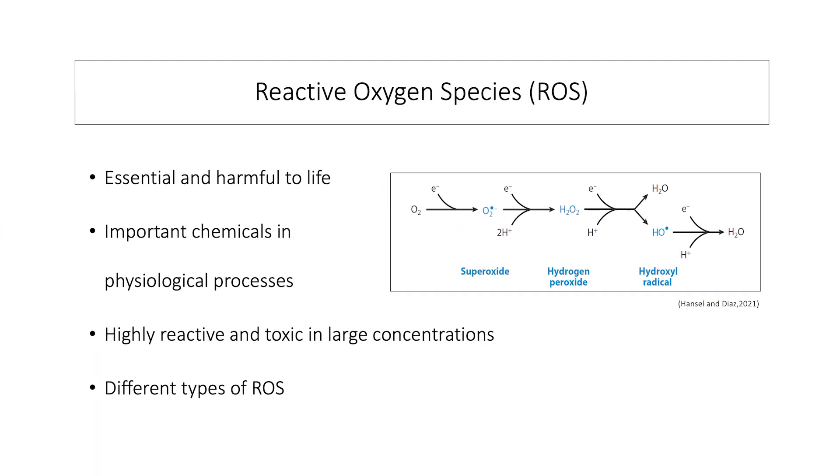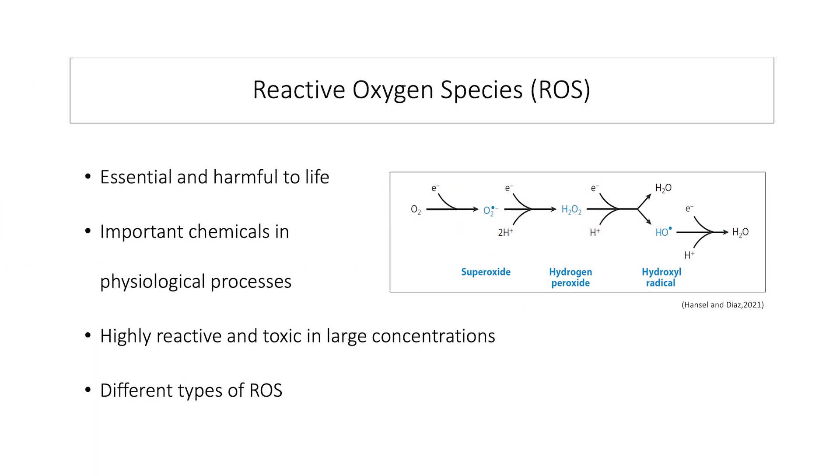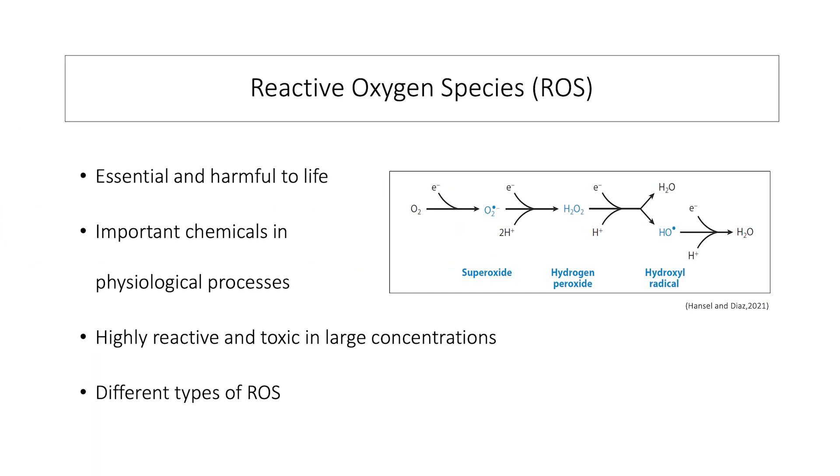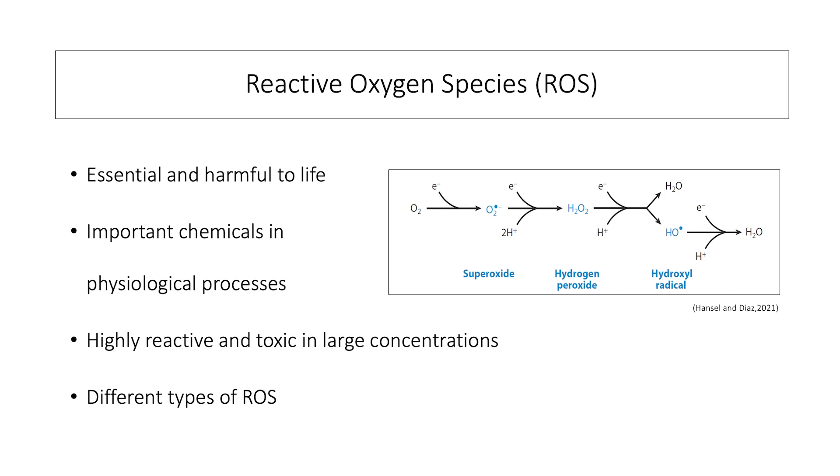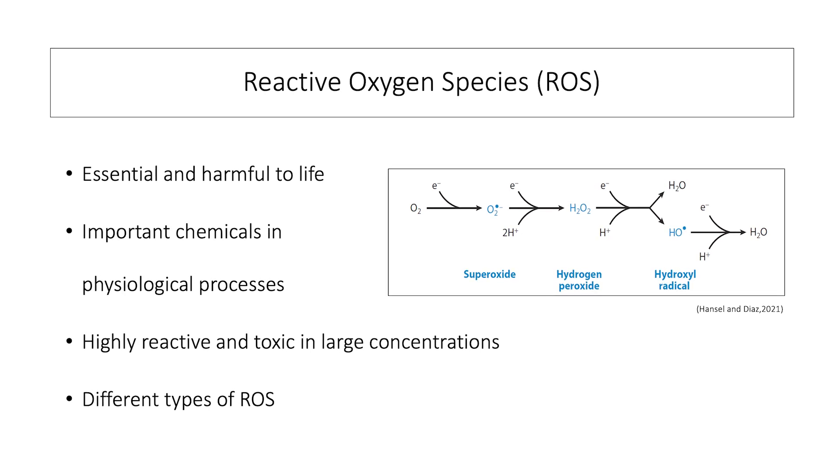When photosynthesis runs too fast, the balance is disturbed, and oxygen can be transformed into different kinds of oxygen. These are called reactive oxygen species because they are highly reactive and can be harmful to life.